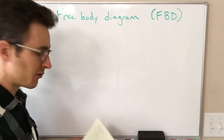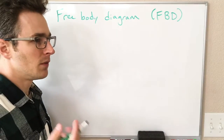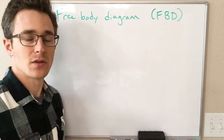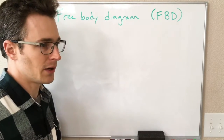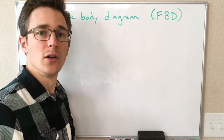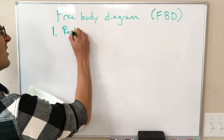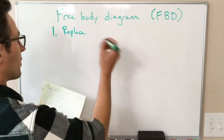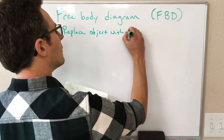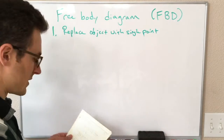The steps to drawing a free body diagram are the following, and these are important. I expect you to be able to do these in the same way these steps outline. For grading purposes, there is a right way and a wrong way to draw a free body diagram. Step one is to replace whatever the object is with a single point — a dot on the diagram.